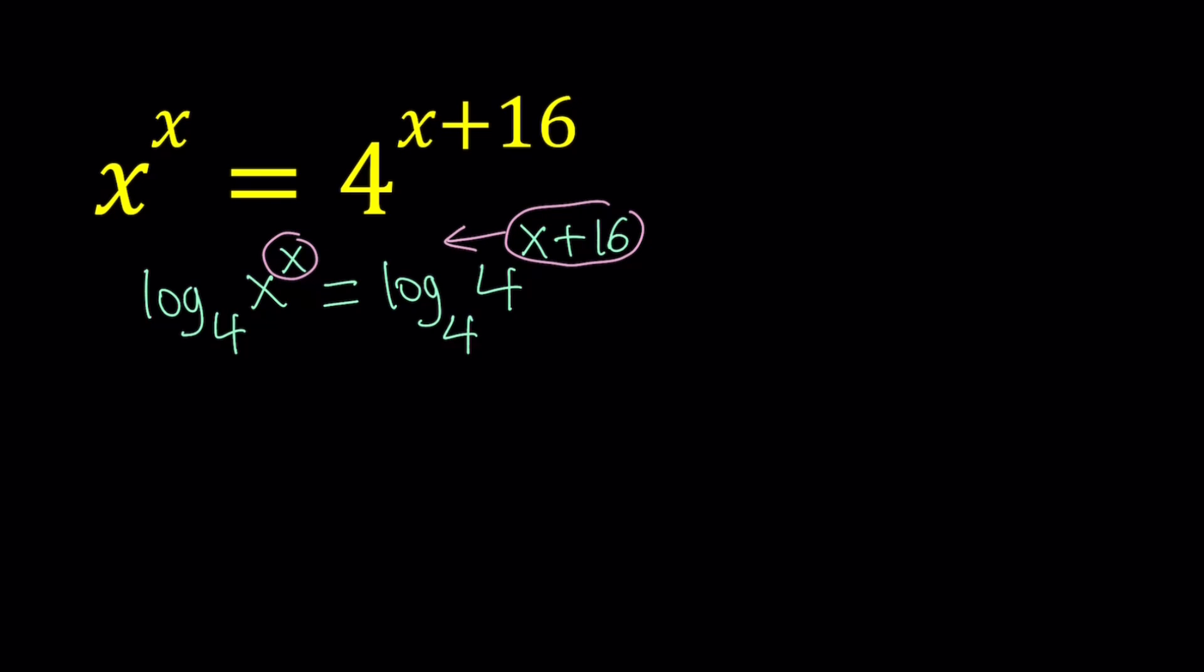By using power properties, we can move these to the front. If you don't know properties of logs, you can look it up. So if you move the x to the front, you get x times log base 4 of x. And this is going to be x plus 16 multiplied by log 4. But since our base is the same as the number we're logging, it's just going to be 1. So log base 4 of 4 is 1, and this is in general true.